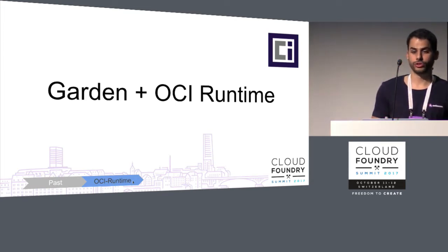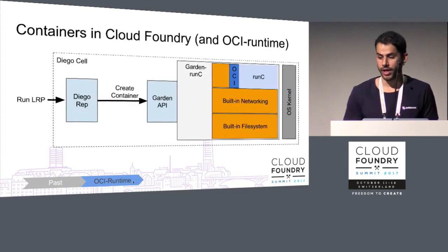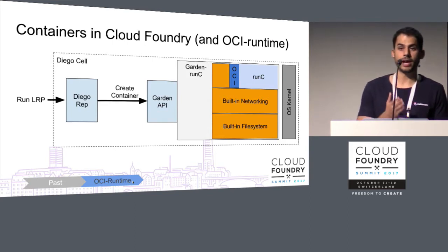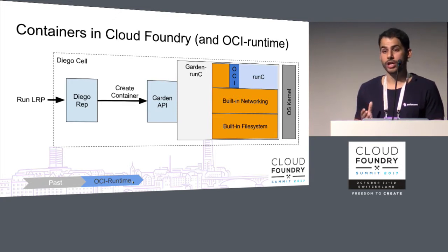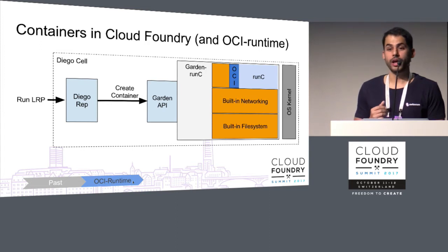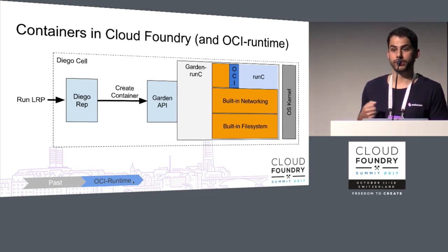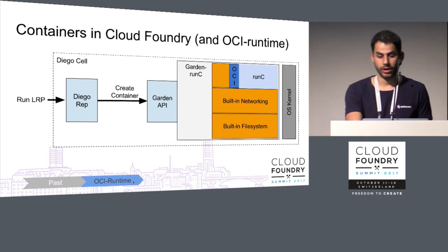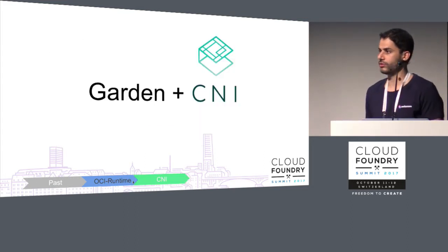The Garden team saw the benefit of using this OCI standard and was one of the early adopters. The architecture changed: from Garden Linux, we renamed the component to Garden-runc and delegated a large part of the component to this external reference implementation. The component became smaller and more flexible, with one part rewritten to support OCI. Community support arrived, so when there was a vulnerability or any issue, people all over the world were working on it. This has been in production for a year or more.